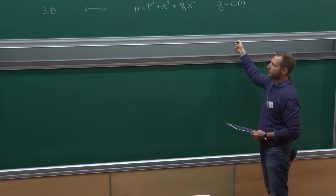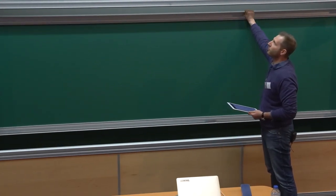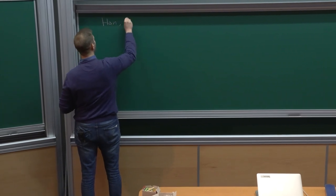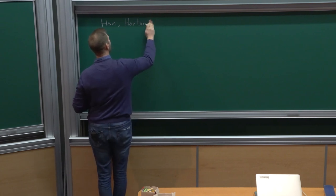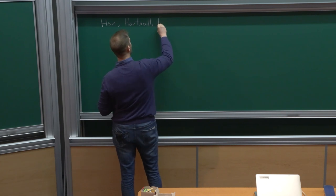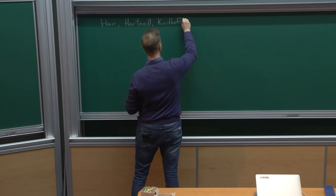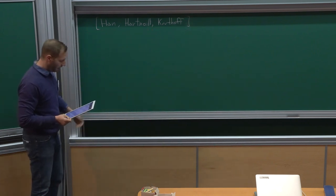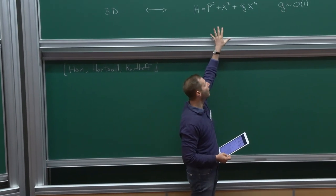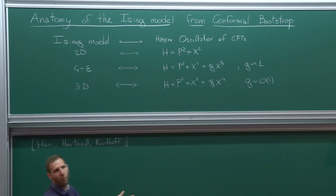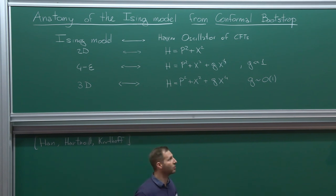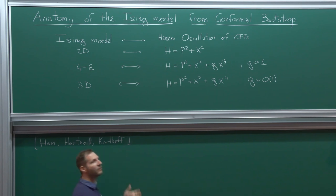This method was devised in a recent paper by Han, Hartnell, and Kratov. We study the problem in the regime where G is of order one — specifically G equals one for simplicity. The idea is to develop a method that uses consistency conditions of the model and allows us to extract quantitative information, for instance about the ground state.